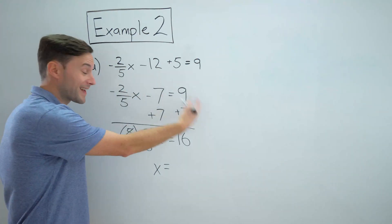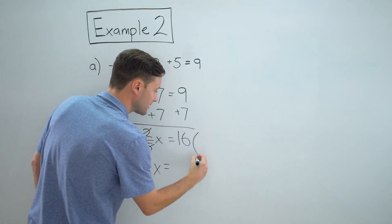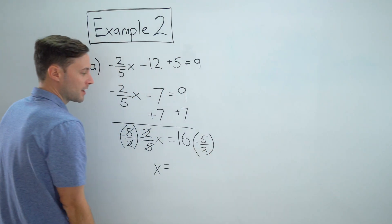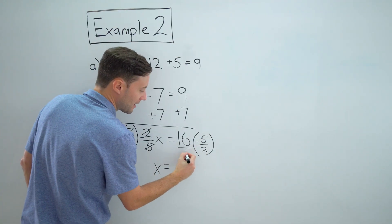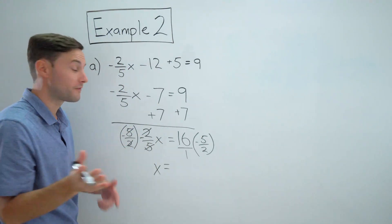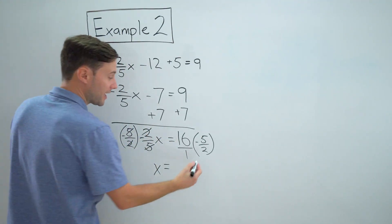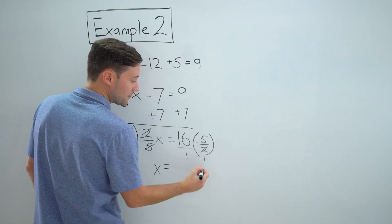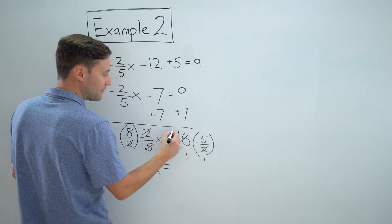Anything I do to one side, I got to do the other though. So this is also getting multiplied by negative five-halves. I like to make that look like a fraction so I don't get confused. Always try to simplify before you multiply if you can. So two goes into 16 eight times, so that becomes one, and that becomes eight.